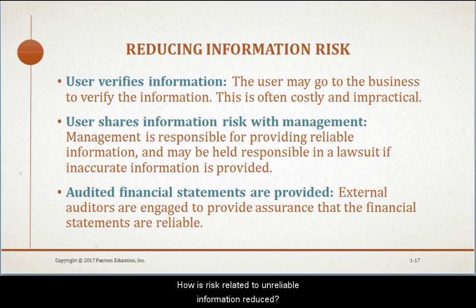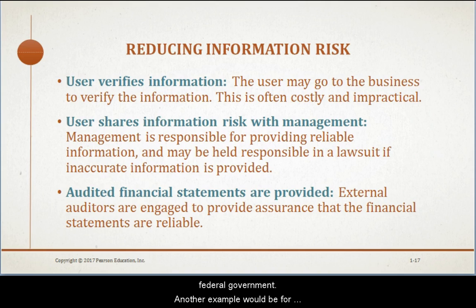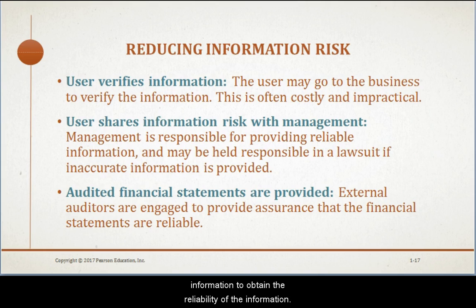How is risk related to unreliable information reduced? The user of information can reduce risk by verifying the information. For example, the Internal Revenue Service verifies business tax returns to determine whether the tax returns filed reflect the actual tax due by the taxpayer to the federal government. Another example would be for the user to examine the records for the source of information to obtain the reliability of the information. This, however, is often costly and impractical to do.